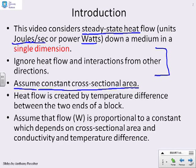We're going to assume a constant cross-sectional area all along the length. And we're going to assume that heat flow is created by a temperature difference between the two ends of a block. So if one end is hot and the other end is cold, then heat will go from the hot end to the cold end at a steady rate.